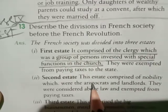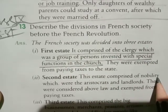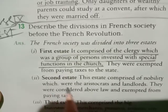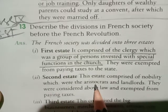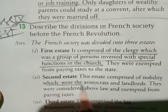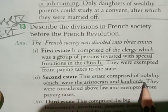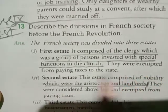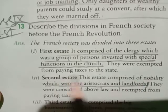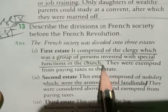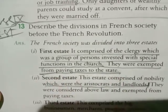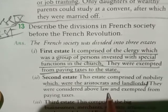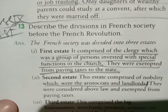Second state: this state comprises of the nobility, which were aristocrats — bhaut hi rahish landlords. And they were exempted from paying taxes to the state. Yen se koi tax nahi pardta tha. Second state ke logon ko bhi koi tax nahi dhena pardta.